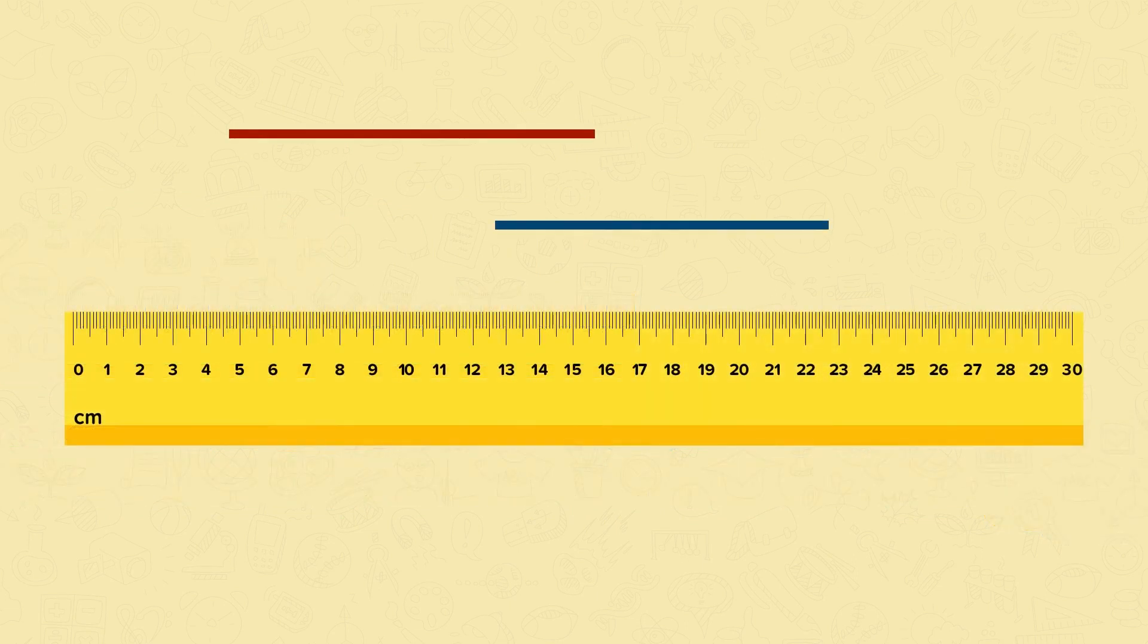Here we have two lines. One red and one blue. When the lines aren't side by side, it's difficult to compare their length. To compare their length, we can measure them using a ruler.